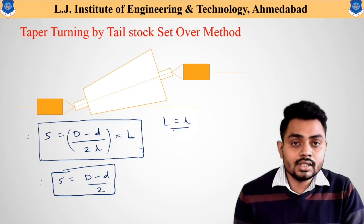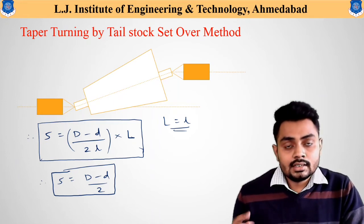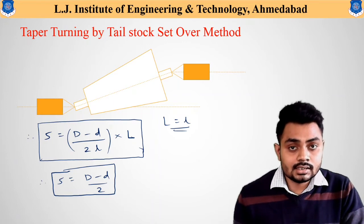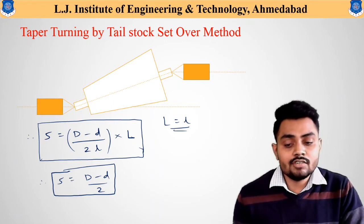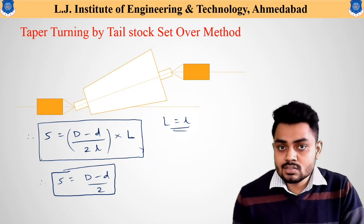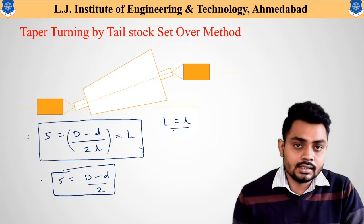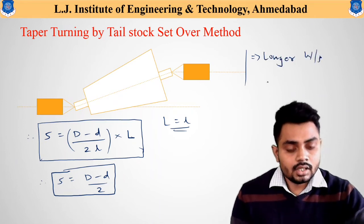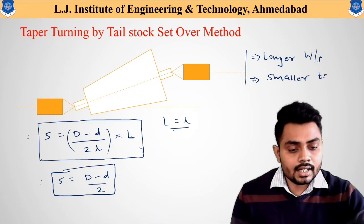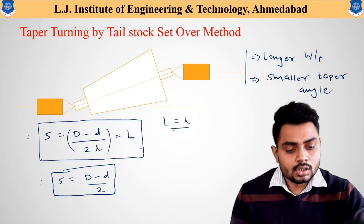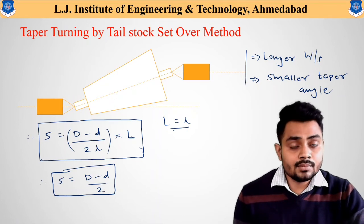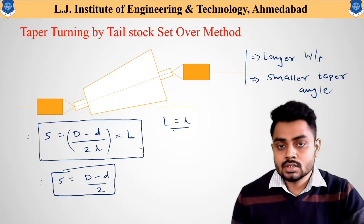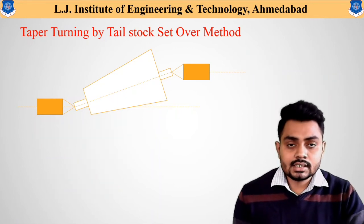We have derived many different formulas which will be helpful during calculation of examples and for derivation purposes. This particular tailstock set-over method is helpful only when the taper to be generated is very small and the workpiece is longer in length. So this tailstock set-over method is useful when a longer workpiece is available and the taper angle to be generated is smaller.